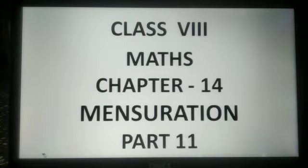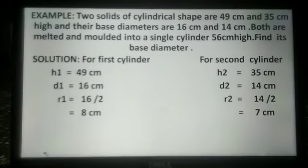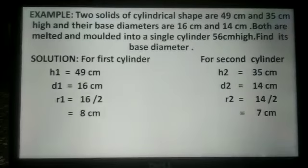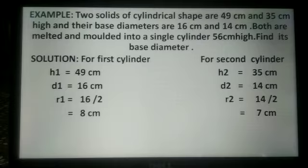Hello students, today we will continue chapter mensuration. Look at this example. Two solids of cylindrical shape are 49 cm and 35 cm high and their base diameters are 16 cm and 14 cm. Both are melted and molded into a single cylinder 56 cm high. Find its base diameter.